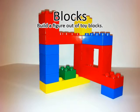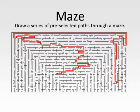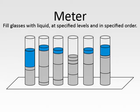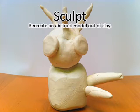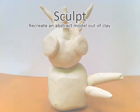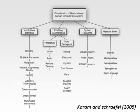Building a figure out of toy blocks. Drawing figures on a sheet of paper. Following a predefined path through a maze. Filling six glasses with liquid at specified levels and in a specified order. Arranging a number of colored paper cut-out arrows. And sculpting a figure out of modeling clay.